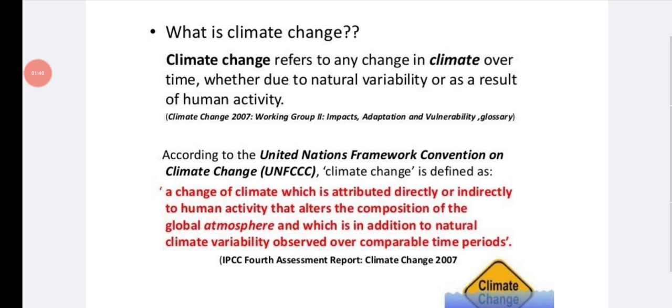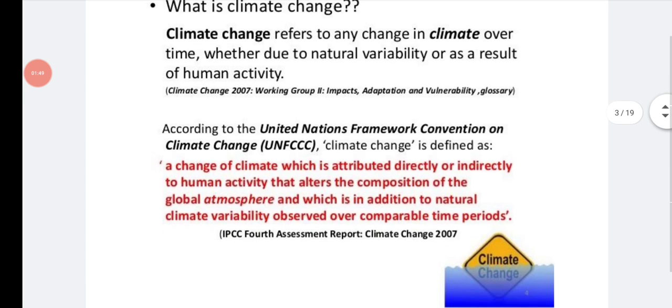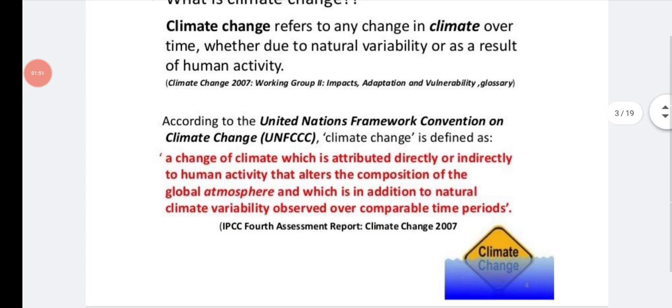According to the UNFCC, that is United Nations Framework Convention on Climate Change, they have given the definition for climate change. That means a climate or a change of climate which is attributed directly or indirectly to human activity that adjusts the composition of the global atmosphere and which is in addition to natural climate variability observed over comparable time periods. So if there is any change in the environment or climate directly or indirect activity by a human, then it is called climate change.